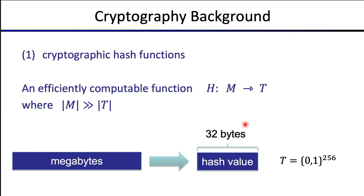Large amounts of data come in, and a fixed amount of data comes out — a very short 32-byte digest. 32 bytes is 256 bits, so the range is {0,1}^256, meaning all 256-bit binary strings. We'll be thinking of these hash functions as outputting 32 bytes for the rest of this segment.